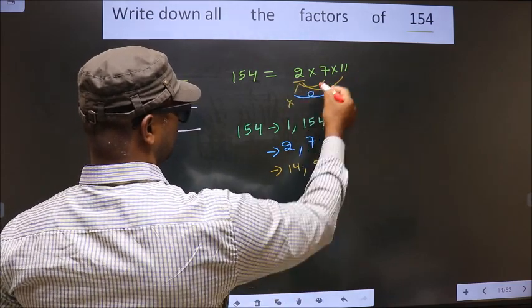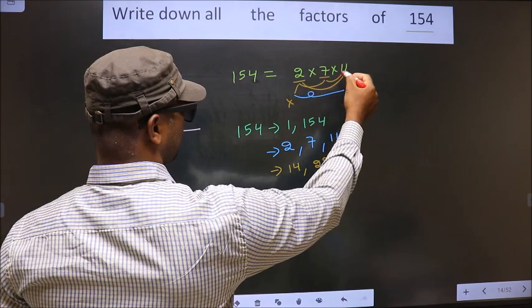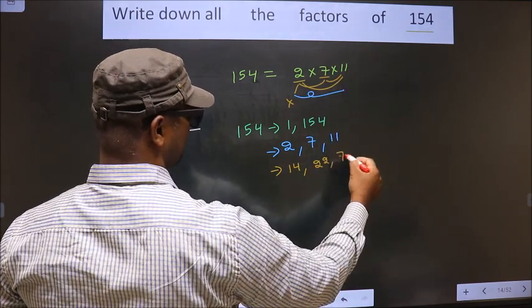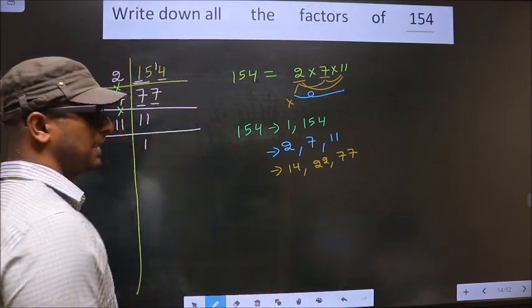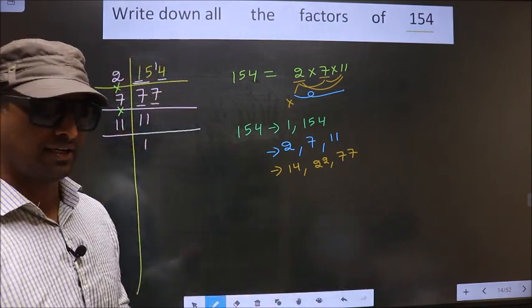Now, you leave 2, fix 7. Combine with 11. 7 into 11, 77. So, no more combinations possible.